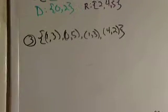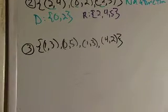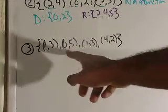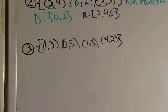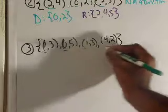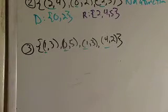How about one more? So you're given 1, 3, 0, 5, 1, 3, 4, 2. So just look at your x values and say whether or not they repeat. Do your x values repeat? Yes, they do for these two right here because I've got 1, 3, and 1, 3.